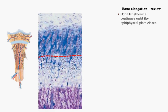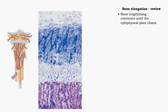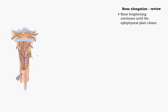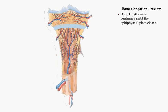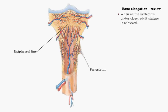This process of bone elongation continues until the epiphyseal plate closes, when cartilage cells in the plate stop proliferating. Bone replaces the cartilage, leaving an epiphyseal line. When this happens, adult stature is achieved.